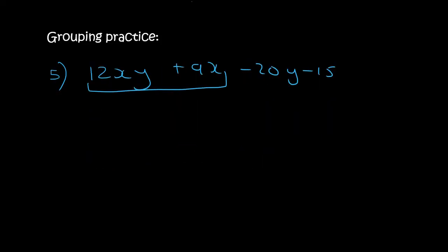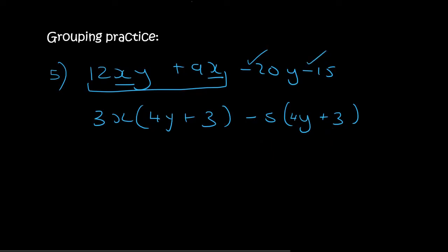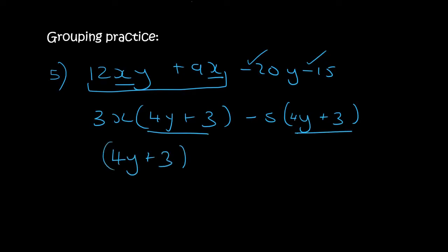In the first two terms, the number 3 can go into both, and they both have an x, so we take out 3x and are left with 4y plus 3. In the next two terms we take out a minus, and we'd be left with 4y plus 3. How do I know it's a plus? Because if I multiply those two I get a negative, and if I multiply those two I get a negative — and that's what we had. So these two are the same, and we take 4y plus 3 out in the front, leaving us with 3x minus 5.